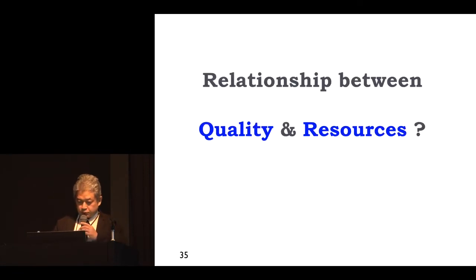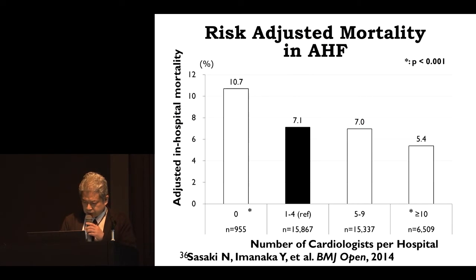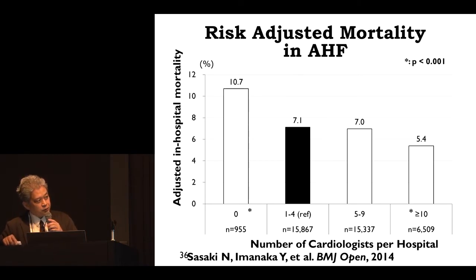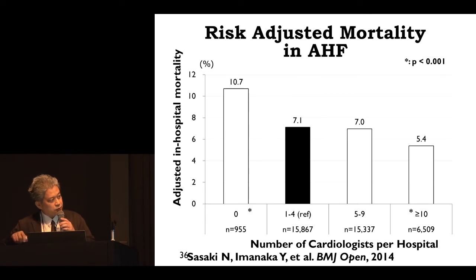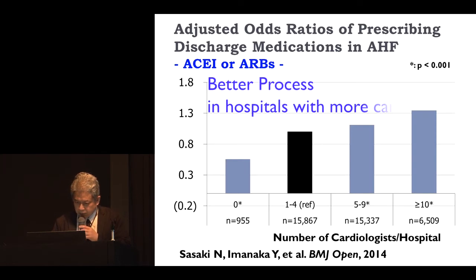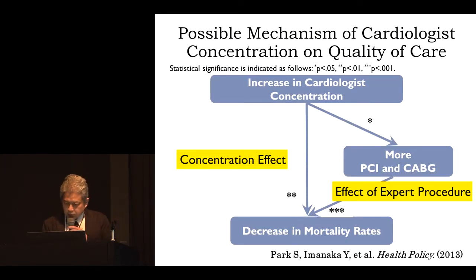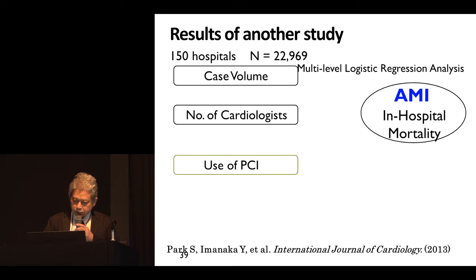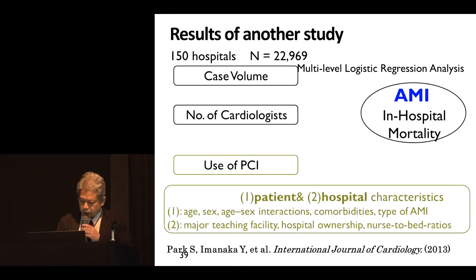As Dr. Otsubo said, quality of care is linked to resources. For example, looking at risk-adjusted mortality in acute heart failure, hospitals with more specialists showed lower mortality, while hospitals with fewer cardiologists showed higher mortality. Various studies in our department showed that staffing of specialists in hospitals is very important for quality of healthcare.